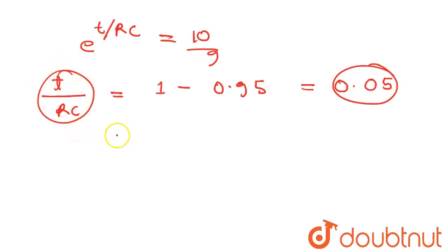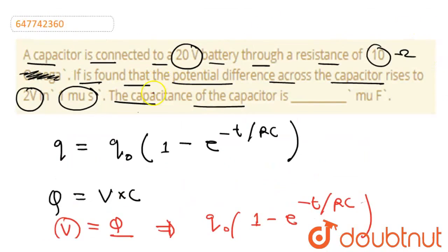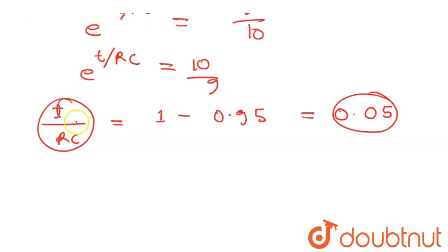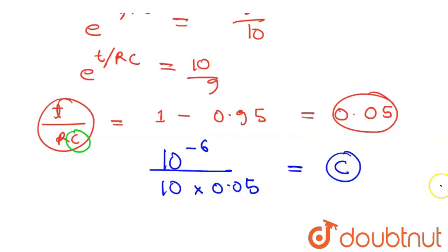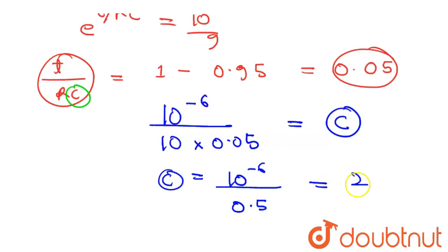Now substituting the values: t over R into C equals 0.05, where t is 1 microsecond (10 to the power minus 6) and R is 10 ohms. Solving for C: C equals 10 to the power minus 6 over 0.5, which gives us 2 into 10 to the power minus 6, that is 2 microfarad.